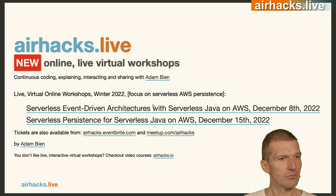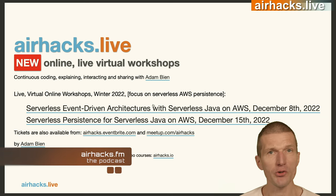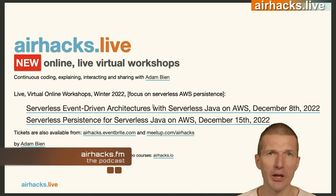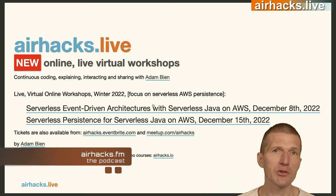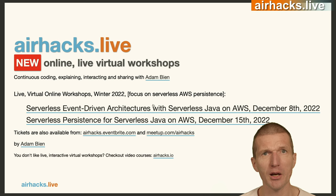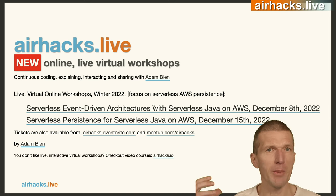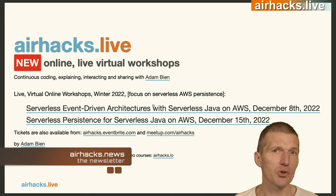A question from Edward: does it make sense to use Lambdas with relational databases and long-running queries? It makes absolute sense. There's a feature called RDS Proxy which sits between the Lambda and the database, increases performance, does connection multiplexing, and also increases security. The max timeout for a Lambda is 15 minutes, so queries have to be faster than that. It's an economical question — if every database call takes one minute, maybe it's too expensive to use Lambda. But usually no problem — lots of projects are doing this.